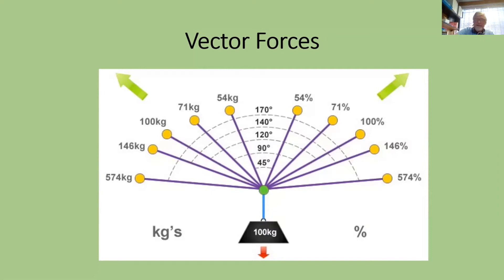When you want to do a pre-climb inspection, there's a typical flow of steps. You look at the whole tree and site, then look at any specific hazards, then do a close-up inspection of the tree. Always go 360 degrees — walk all the way around and look from all sides. Start from the base, roots, base of trunk, trunk, and branches. Then for the climb, select a tying point that's strong enough.